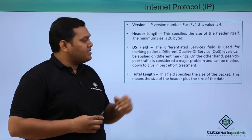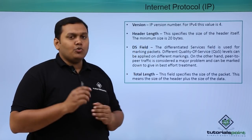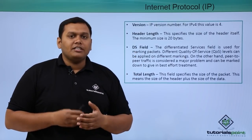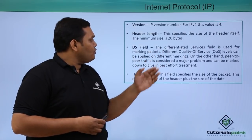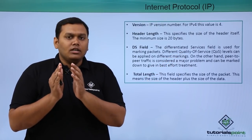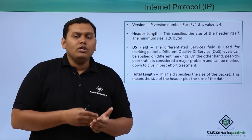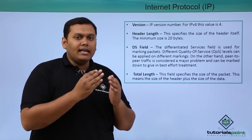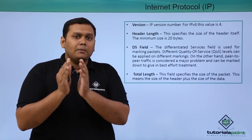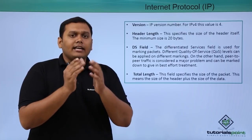The header length field specifies the size of the header itself. The minimum size is 20 bytes and the maximum depends on the header content. The DS (Differentiated Services) field is used to mark packets or fragments and is also used for QoS (Quality of Service). Each fragment receives a separate marking so that segments can be reassembled correctly.